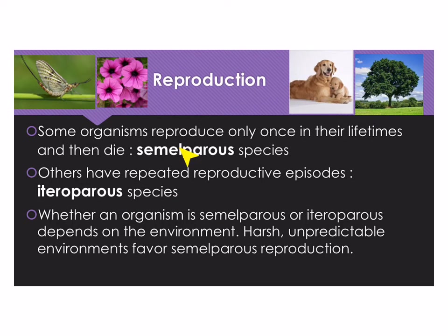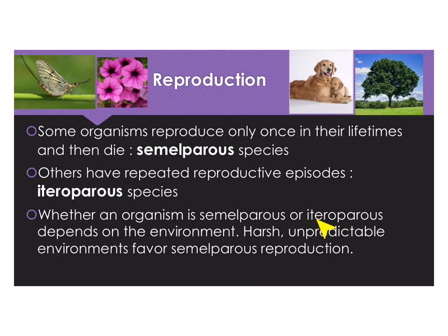So these are two different reproductive strategies. This mayfly would be semelparous, along with this petunia — they have only one bout of reproduction and then they die. Iteroparous species, such as mammals or a tree that flowers and fruits every year, do not reproduce just one time. Whether an organism follows either strategy depends a lot on the environment — if the environment is harsh and unpredictable, it will favor the semelparous strategy.